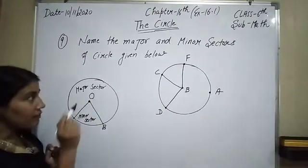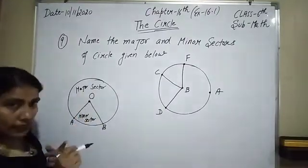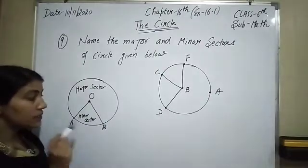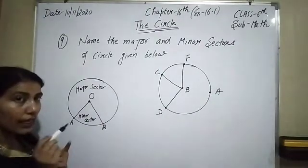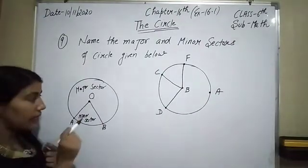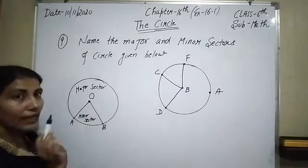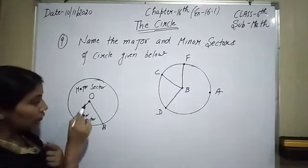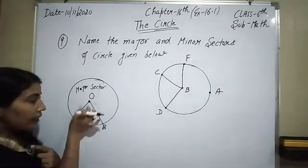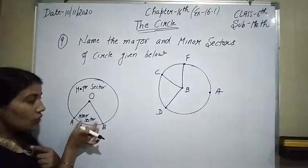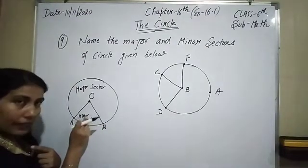When we find the minor or major sector, we have to look at the radii first because we have to see the area enclosed with the two radii. The area enclosed with the smaller one is called the minor sector.